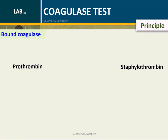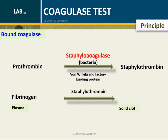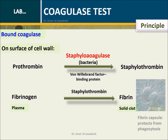Principle — bound coagulase: Staphylococci, along with von Willebrand factor, activates prothrombin to Staphylothrombin. Staphylothrombin then reacts with fibrinogen to produce fibrin. Fibrin forms a capsule around the bacteria to protect it from phagocytosis.